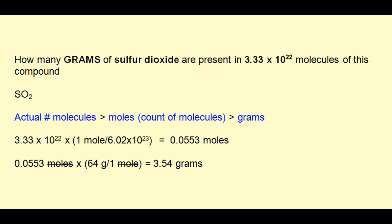The number of moles is 0.0553, and that number should make sense because we only have 3.33 times 10 to the 22nd molecules. In order to have one mole of anything, we need 6.02 times 10 to the 23rd of those items.